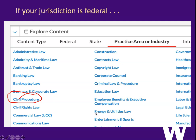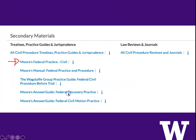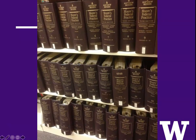If your jurisdiction is federal, in Lexis, go to Practice Area or Industry and you'll see that they have a practice area for civil procedure. Choose that and they list civil procedure treatises. They have Moore's Federal Practice. In the print world, Moore's Federal Practice is a huge set. Sometimes when you're looking at things online, you can't tell whether this is just a teeny overview or an exhaustive treatise — let me tell you, Moore's Federal Practice is an exhaustive treatise.